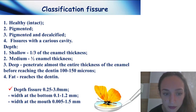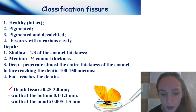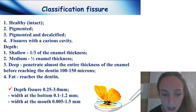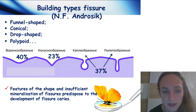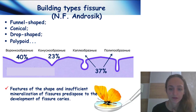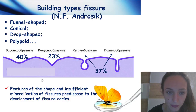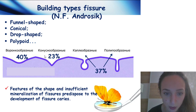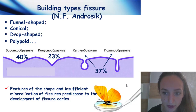Depth can be shallow, medium, deep, and flat — depth of fissure 0.25 to 3 mm. Fissure building types: funnel-shaped, conical, drop-shaped, and polypoid. This slide shows each shape: funnel-shaped, conical, drop-shaped, and polypoid.